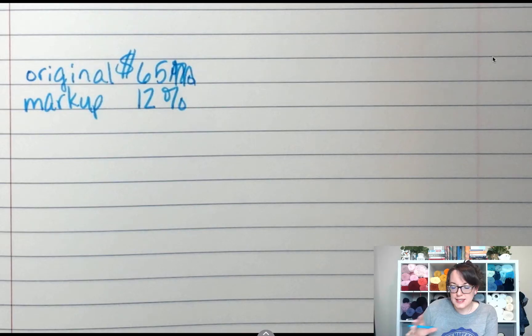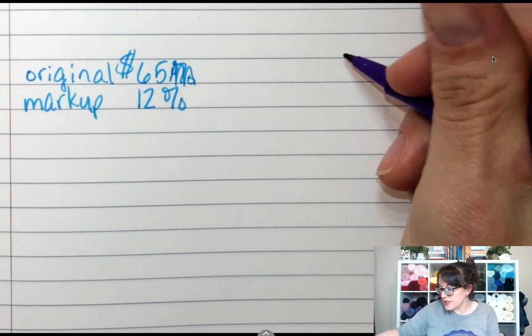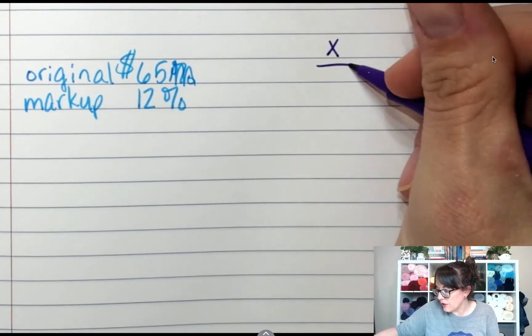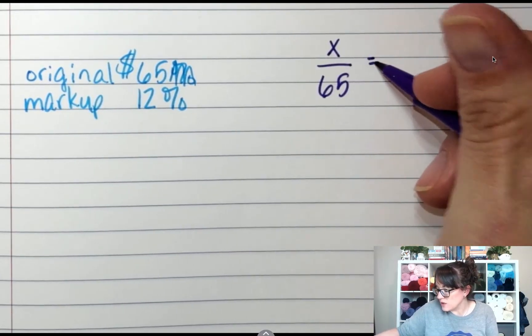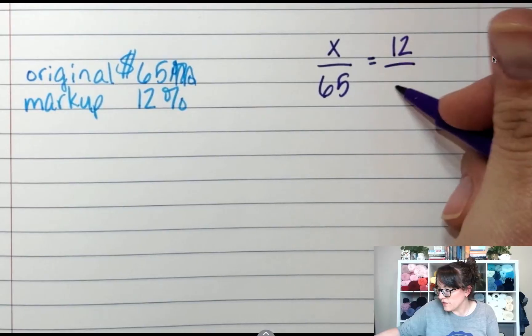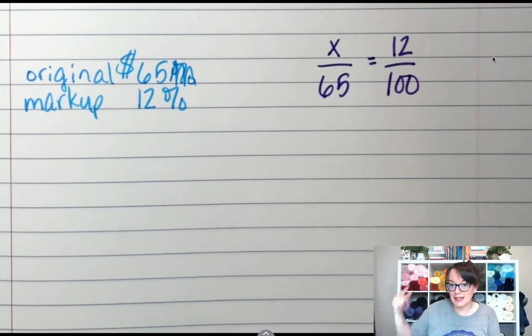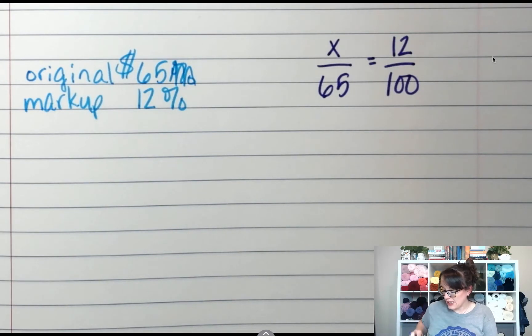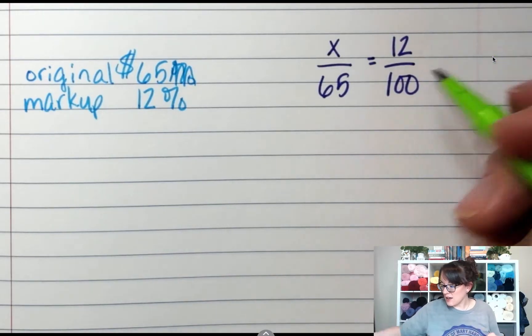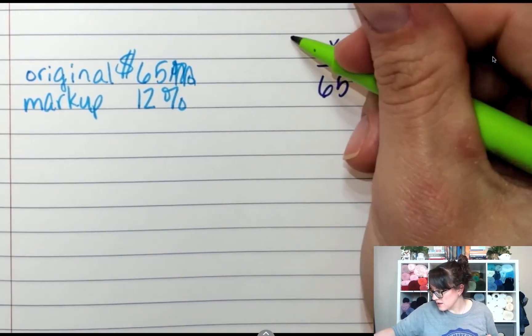The process is the same. So when I set up my proportion, I'm still going to do x over 65 equals 12 over 100, just like I did up top. I'm still going to cross multiply and divide, which gave me how much? It was 780. So this is 780, just like it was.